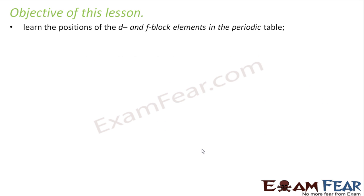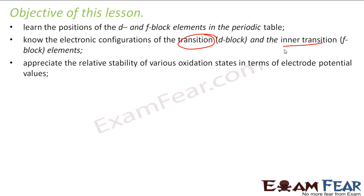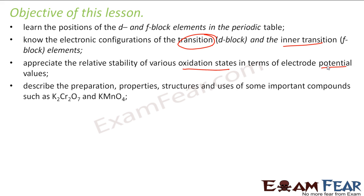The objective of this lesson is to learn the position of D and F block elements in the periodic table. We'll know the electronic configurations of D block elements, also called transition elements, and F block elements, also called inner transition elements. We'll appreciate the stability of various oxidation states and try to understand them in terms of standard electrode potential.